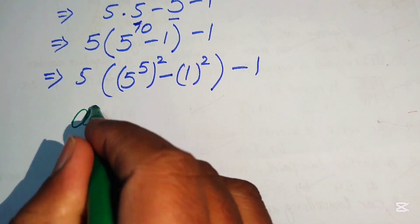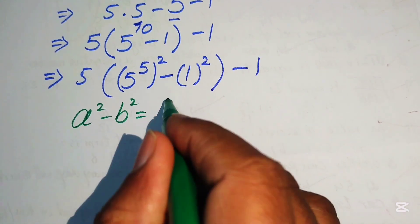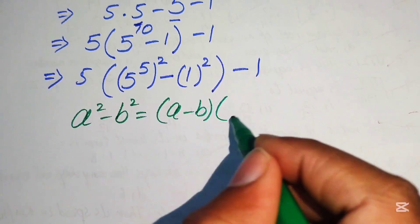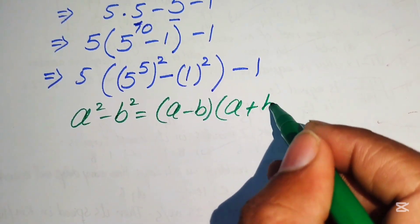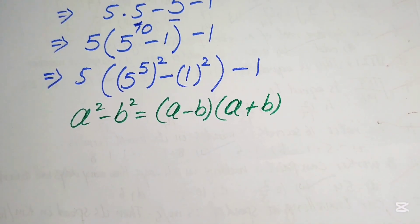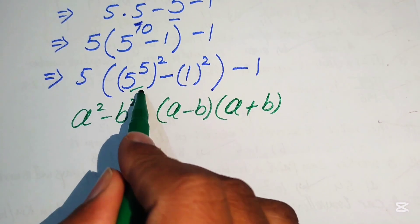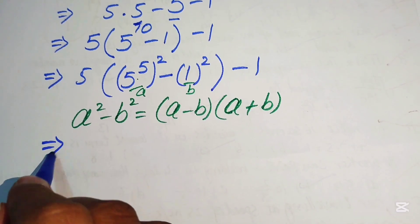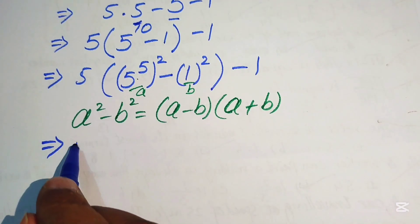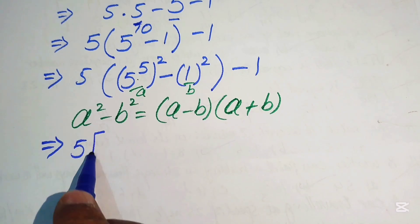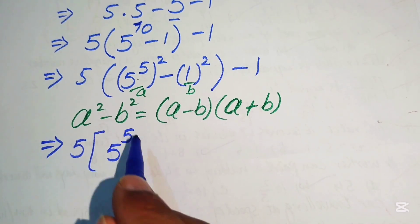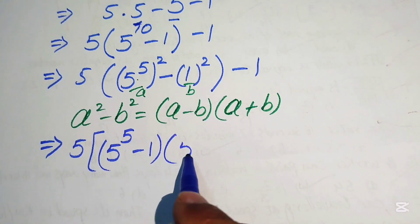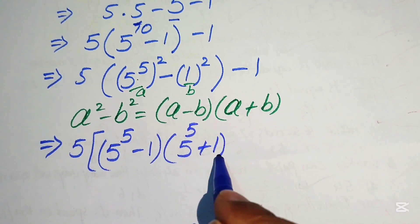The algebraic formula is: a squared minus b squared equals (a minus b)(a plus b). Here, a equals 5 to the power of 5 and b equals 1. Substituting, the expression becomes 5 times (5 to the power of 5 minus 1)(5 to the power of 5 plus 1), minus 1.